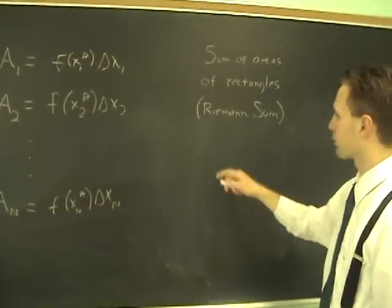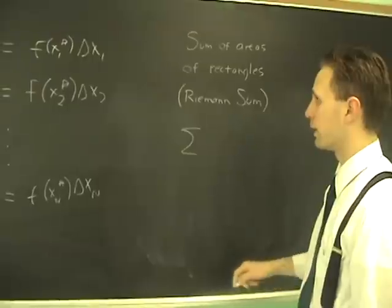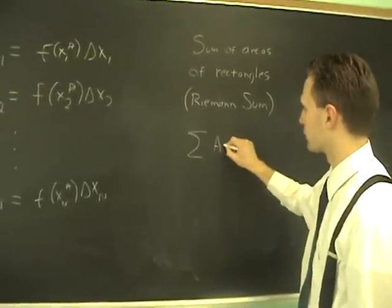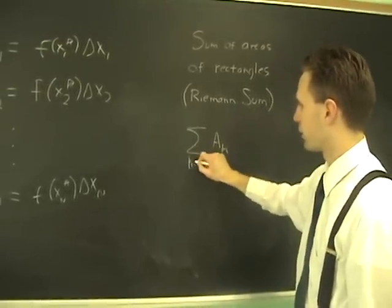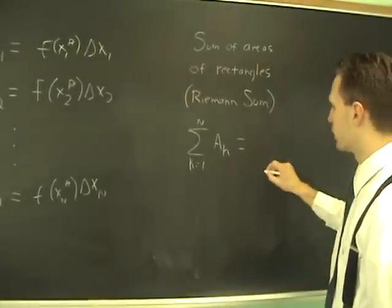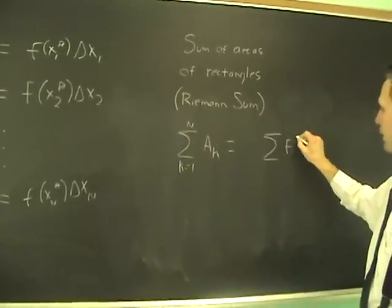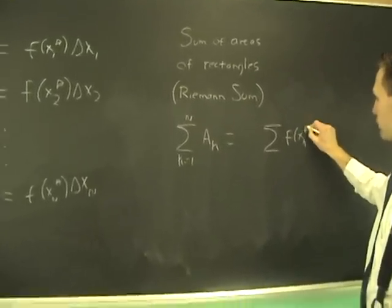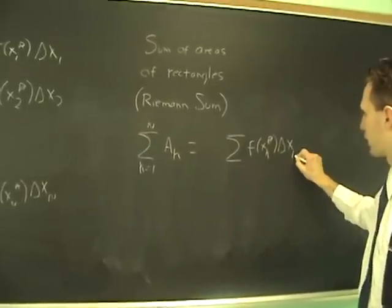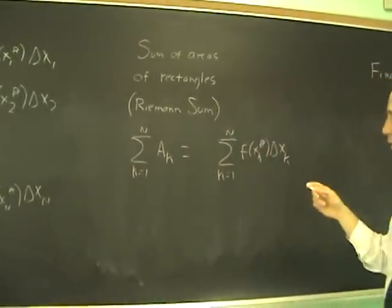The sum of the areas of the rectangles—I'll use sigma notation—will be the sum of A_k from k equals 1 to n. This is the approximate area, which equals the sum of f of xk star delta xk from k equals 1 to n. This is just the approximation.